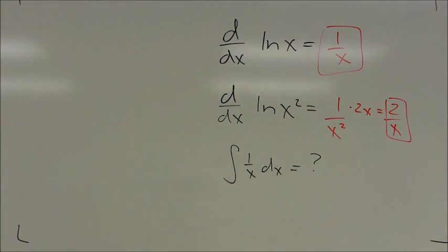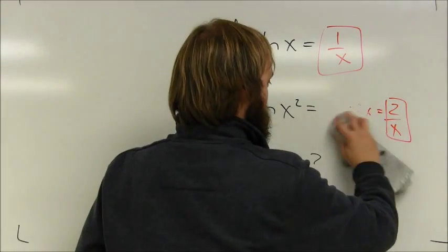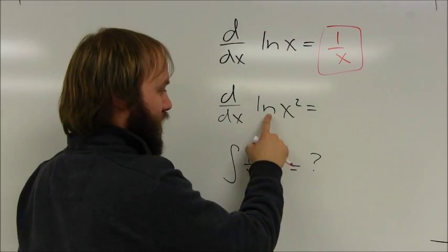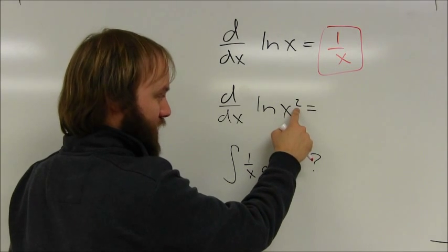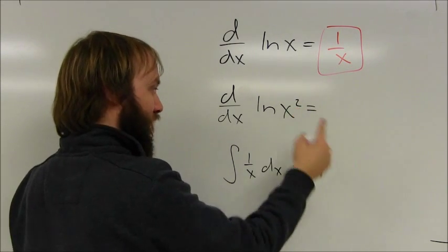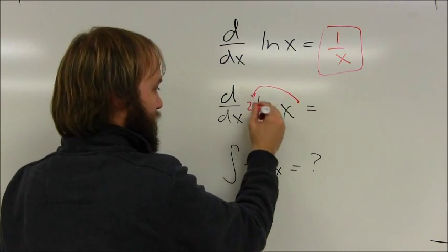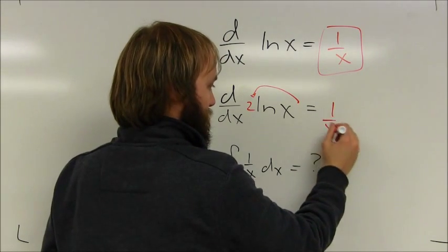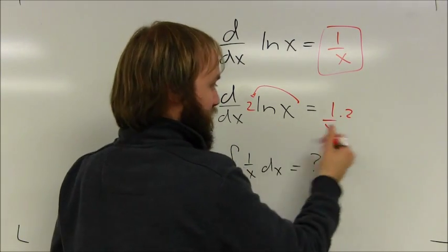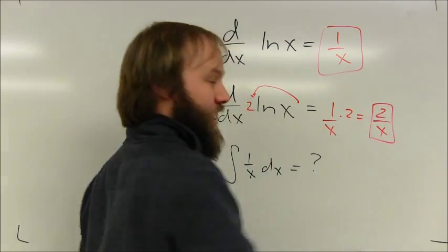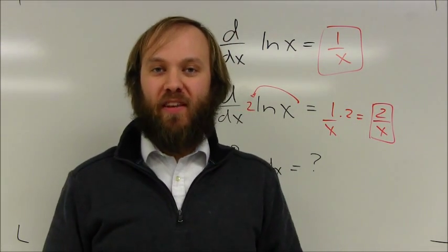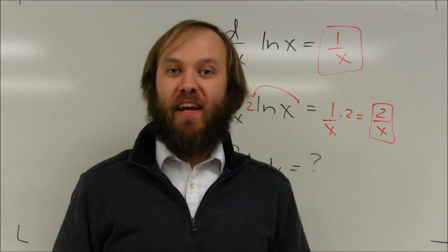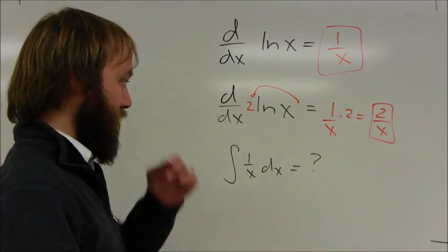That's not the only way you can do that problem. You could also use log simplification rules: since I've got a log of a value that has an exponent, I can swing that exponent out front and write it as 2 times the natural log of x. That's just going to be 1 over x times 2, which is the same 2 over x. So there are multiple approaches, and you want to be familiar with both because simplifying can make a big difference in how easy it is to solve a problem.